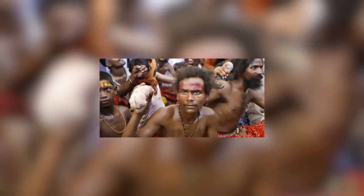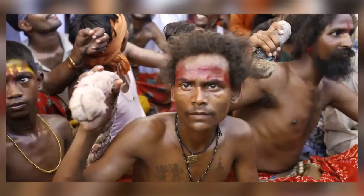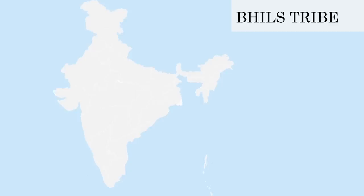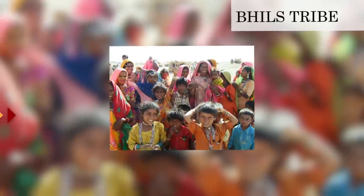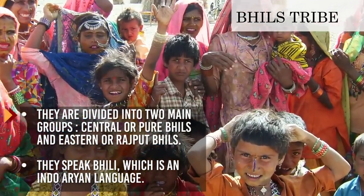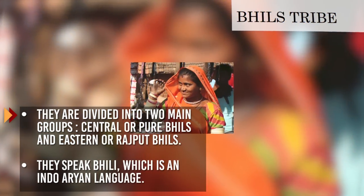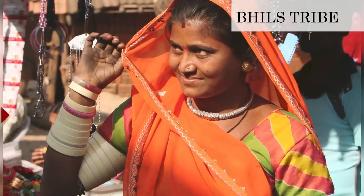List of Tribes in India. The tribal populations found across various parts of the country are listed as follows. Bills: the name Bills is derived from the bow. They are found in Madhya Pradesh, Gujarat, Rajasthan, Maharashtra and the north-eastern part of Tripura. They are divided into two main categories: central or pure Bills and eastern or Rajput Bills. They speak Bili, which is an Indo-Aryan language.